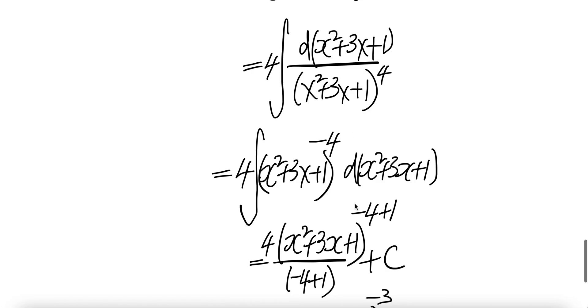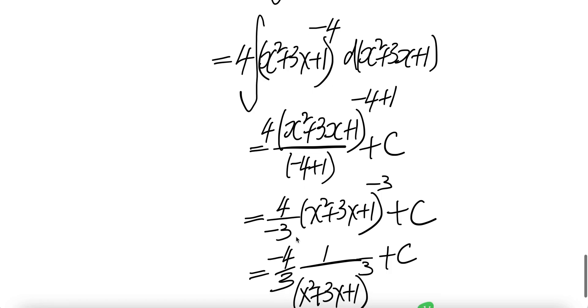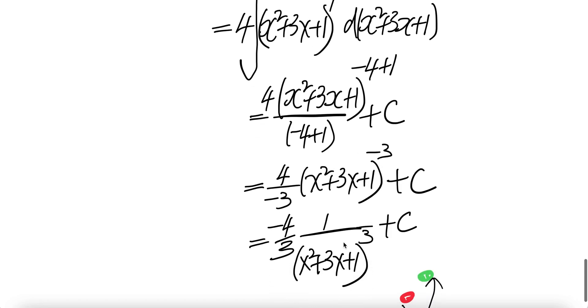And then the integral of this is integral y to the minus 4 dy is y to the minus 4 plus 1 over minus 4 plus 1. Y is x squared plus 3x plus 1. Minus 4 plus 1 is minus 3 up, minus 3 down. Then you get 4 over negative 3. And then write this as 1 over x squared plus 3x plus 1 to the power of 3 plus C.